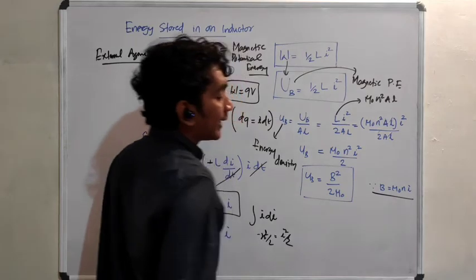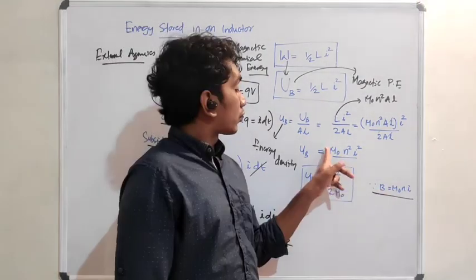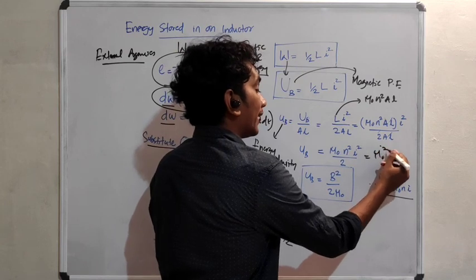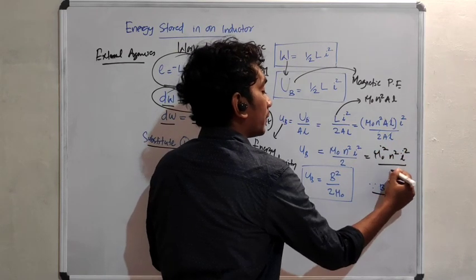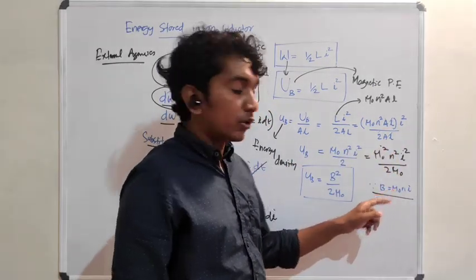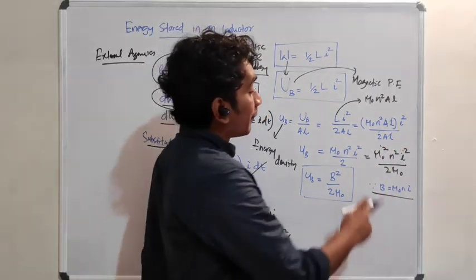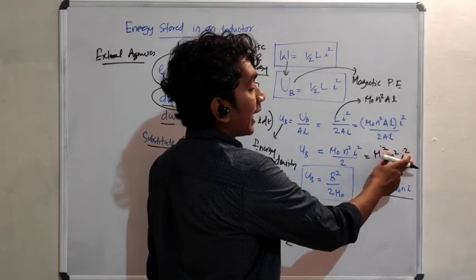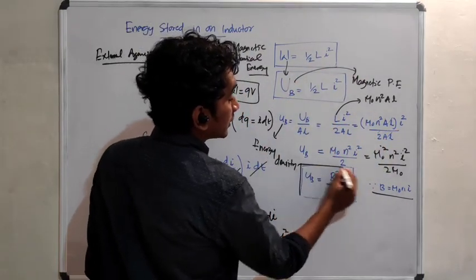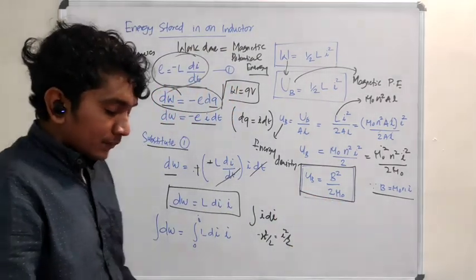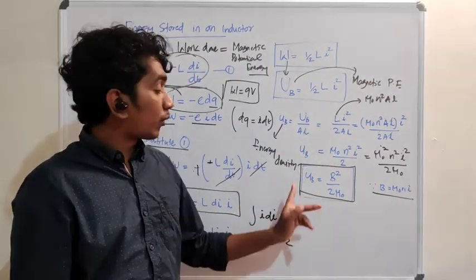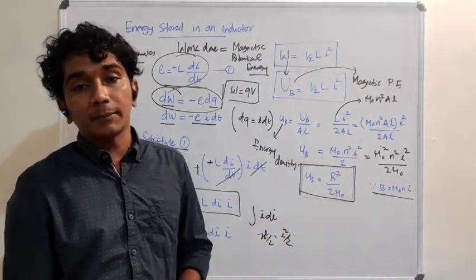We also know that B = μ₀NI. So multiplying and dividing by μ₀, we can write μ₀²N²I² / (2μ₀), and recognizing that μ₀NI whole squared equals B squared, the energy density becomes uB = B² / (2μ₀). That is the magnetic potential energy density.